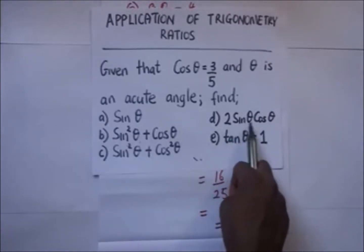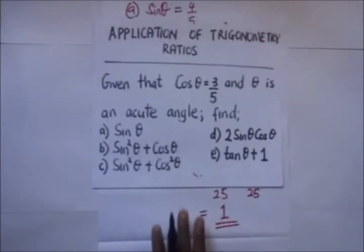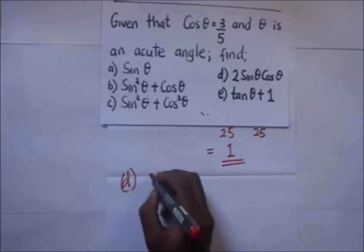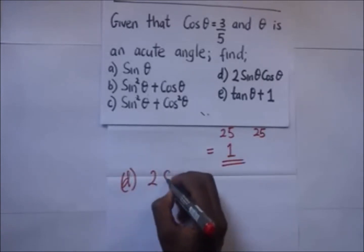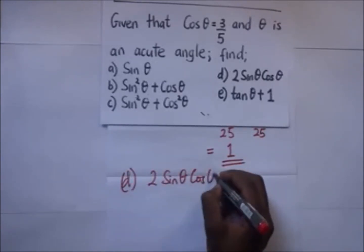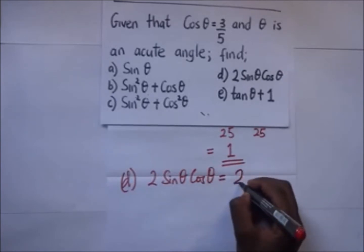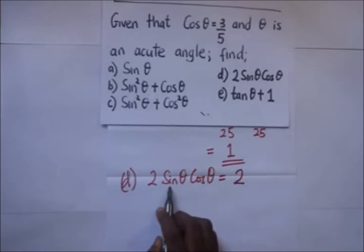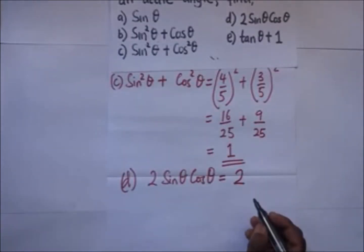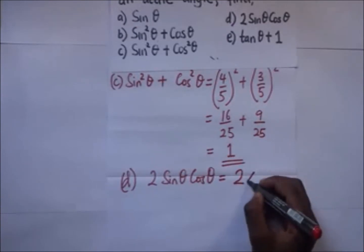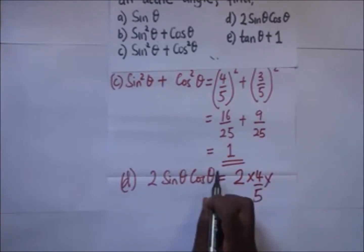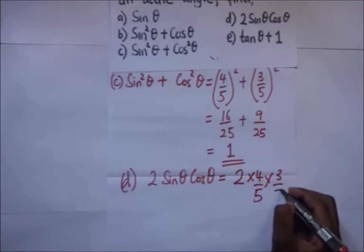Part d: two sine theta cos theta. We simply substitute: two times sine theta which is four over five, times cos theta which is three over five.